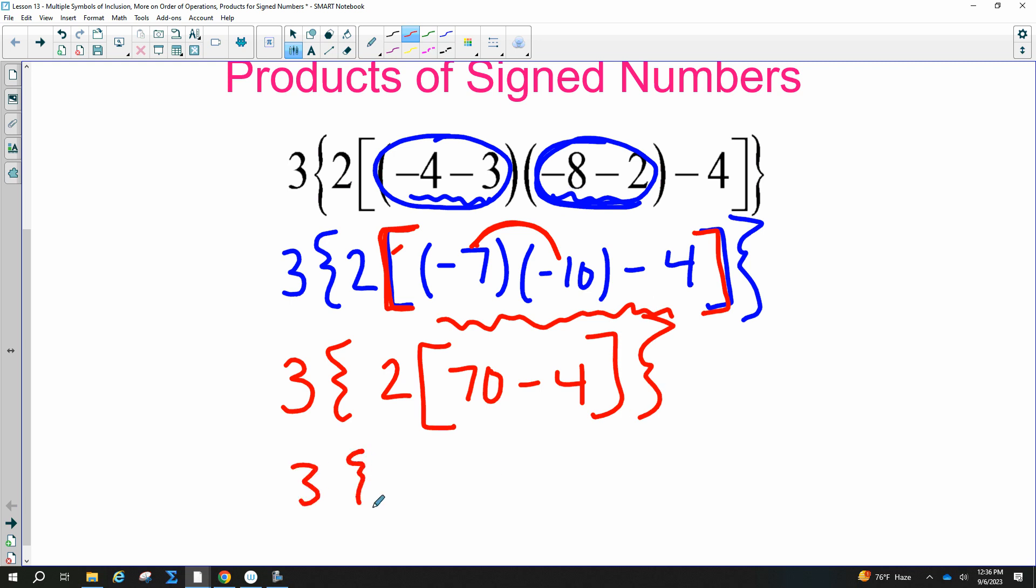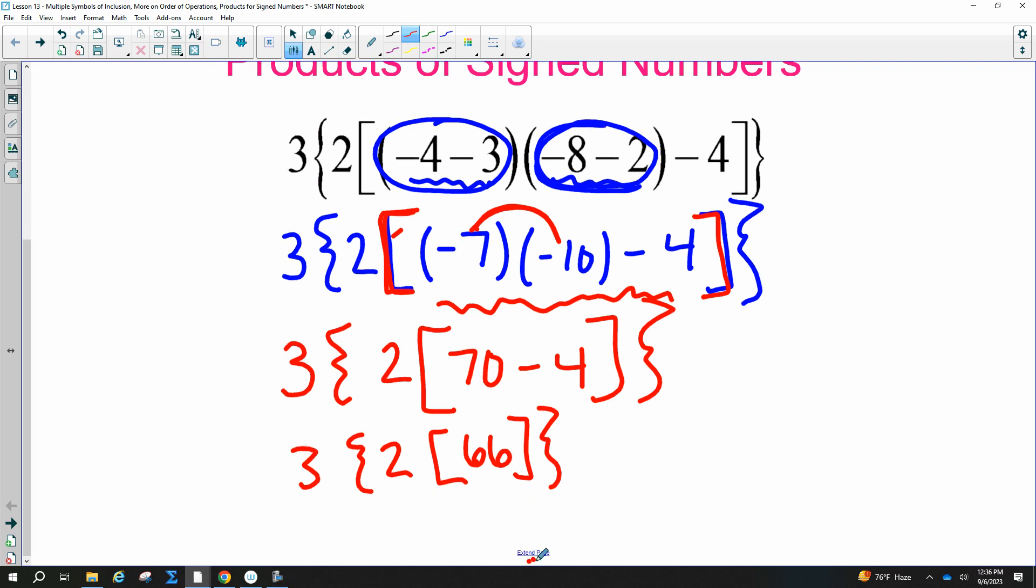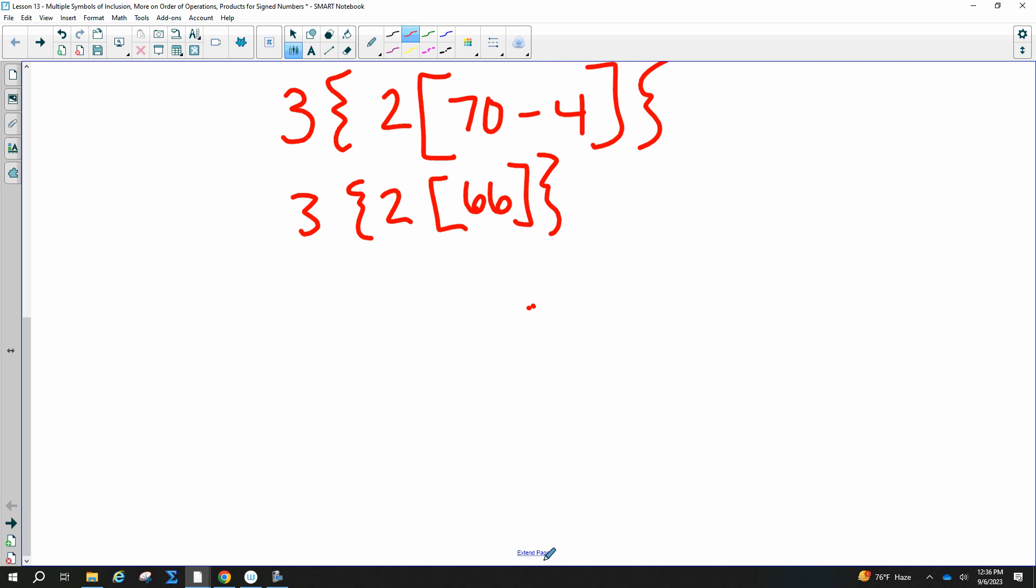Alright, now I need to go ahead and subtract 70 minus 4 is 66. And now I multiply. You could do the 2 times the 66 or the 3 times the 2. I guess I'll do 2 times 66. Let's get that over with, 132. And then I've got to multiply that by 3, 396.